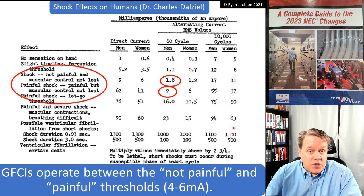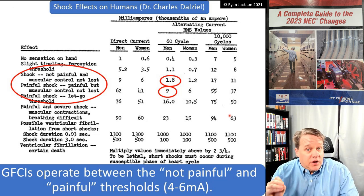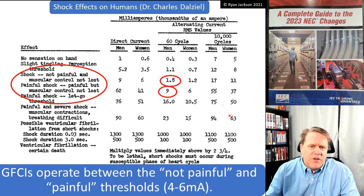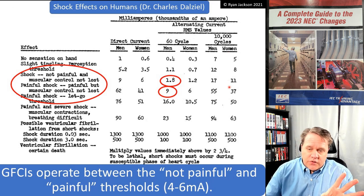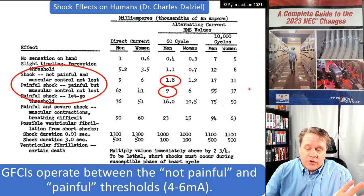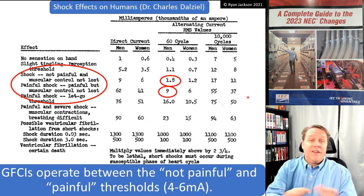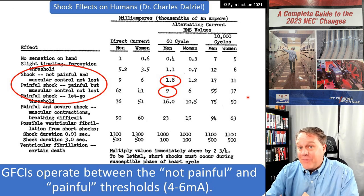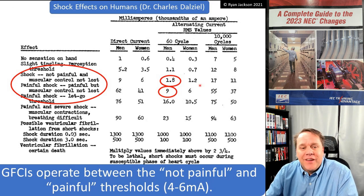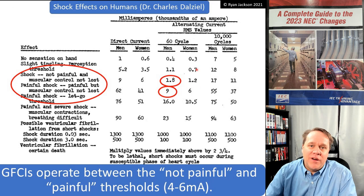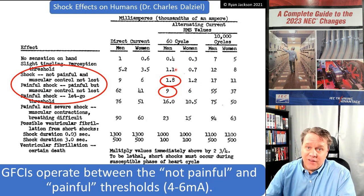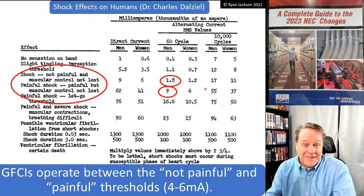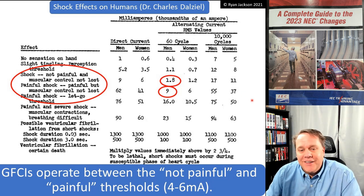Looking at shock thresholds — this is actual research done by Dr. Charles Dalziel back in the 1950s. Dr. Dalziel was the inventor of the GFCI and a professor of electrical engineering at UC Berkeley. He had a lot of volunteers he could test on — his students. He figured out at what point shocks become painful, at what point people cannot let go, at what point they go into respiratory paralysis, and estimates of when they would be fatal. His research is still used today in UL 943.